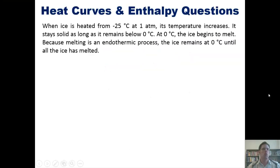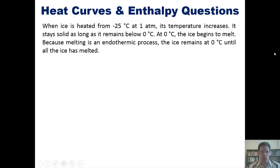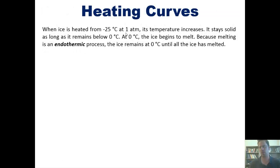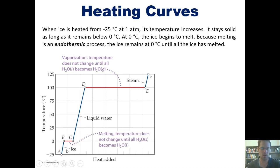So when ice is heated from negative 25 degrees Celsius at one atmosphere, its temperature rises. It stays solid as long as it remains below zero degrees Celsius. At zero degrees Celsius, however, the ice starts to melt. Because melting is an endothermic process, the ice stays at zero degrees C until all the ice has melted. You can see that shown in this diagram, which is called a heat curve. We're starting our ice at negative 25, and its temperature gradually raises, but this whole time it stays solid.